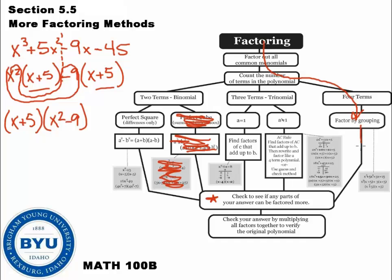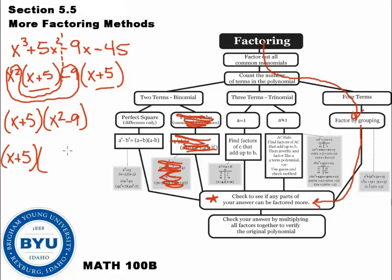So we factored it correctly. Now, as we continue down the map, it tells us we need to check, because we may have done everything right but there may be more factoring involved. x plus 5 doesn't factor more, but x squared minus 9 is interesting — that seems like a two-term polynomial that we can factor more. Remember, if you have a two-term binomial and it's a perfect square with differences — subtraction, a perfect square, and subtraction — it factors more. So we need to apply that rule to x squared minus 9.